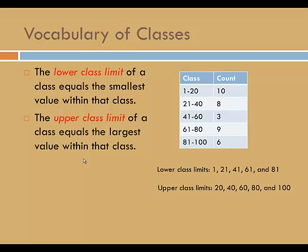The upper class limit of a class equals the largest value within that class. In the table on the right, the upper class limits are 20, 40, 60, 80, and 100.